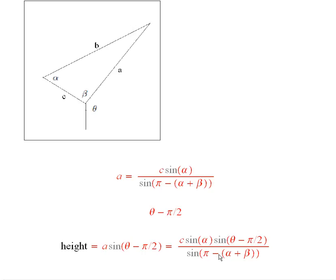And now you see I've been able to find the height of this mountain in terms of things that are actually measurable: alpha, theta, and beta, and also c, of course.